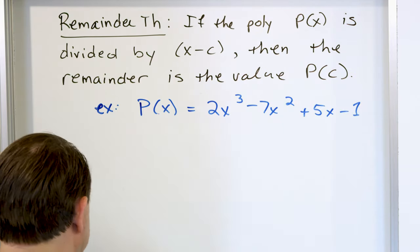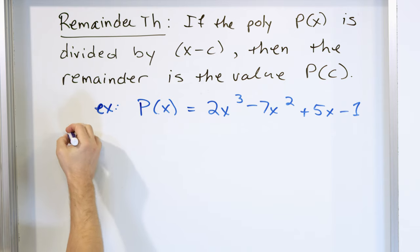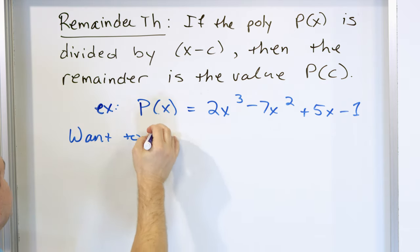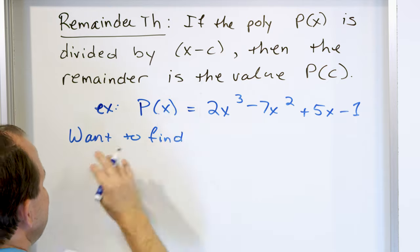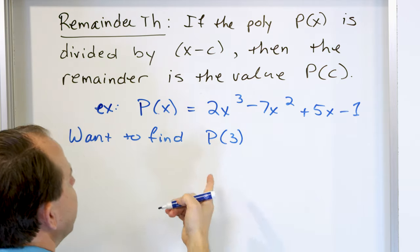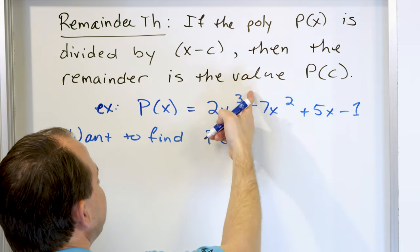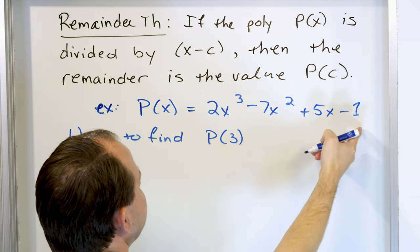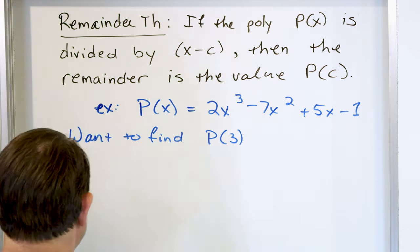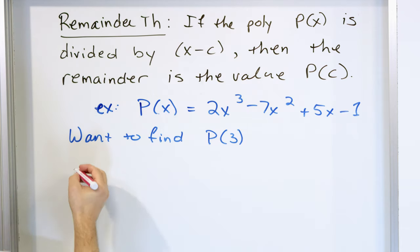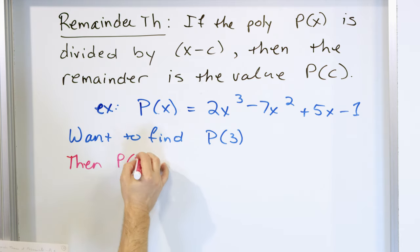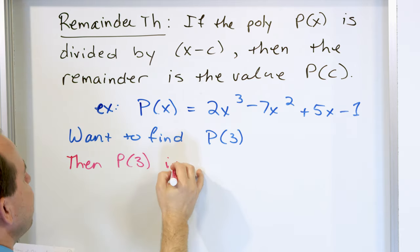What the remainder theorem is telling you is this: if you want to find any value — let's just pick p evaluated at 3 — I would stick 3 in here and cube it, square it, and so on, multiply and add everything. But another way to find p of 3 is the remainder left over when we divide the polynomial by x minus 3.